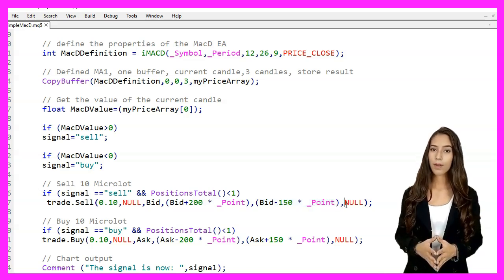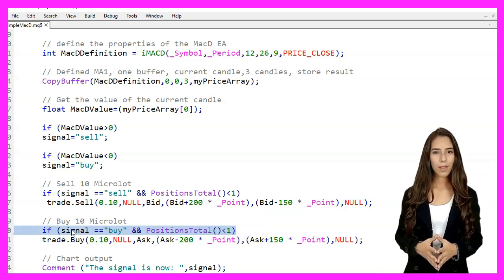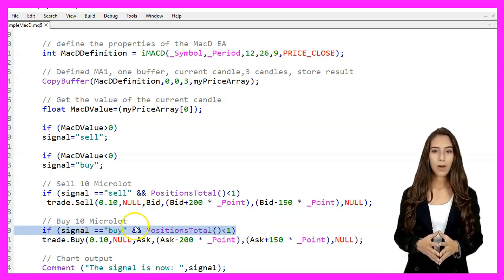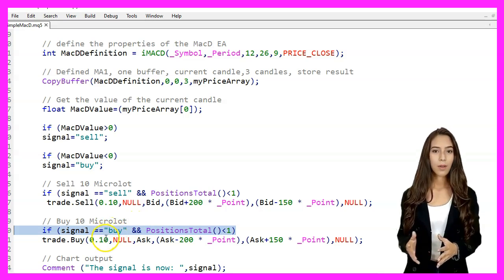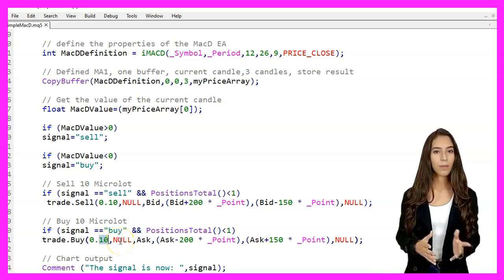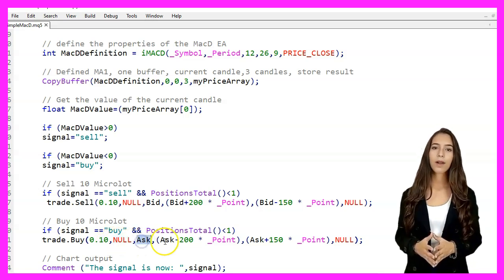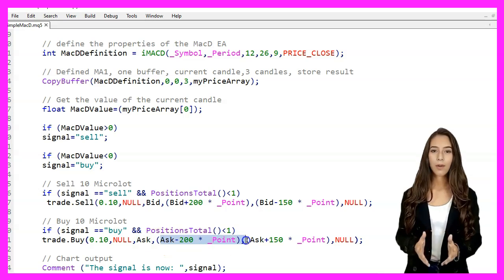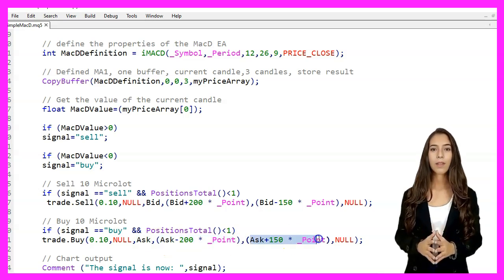For the Buy condition, if the signal is Buy and there are no open positions, we execute a Buy trade of 10 microlots. We use the Trade.Buy function with the parameters Volume 0, Symbol, Null, Price, Ask, Stop Loss, Ask 200 points, Take Profit, Ask 150 points, and Comment.